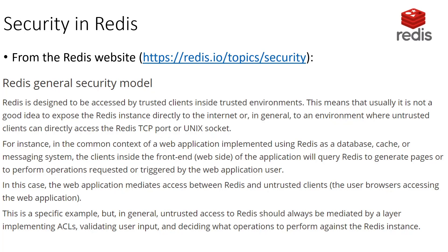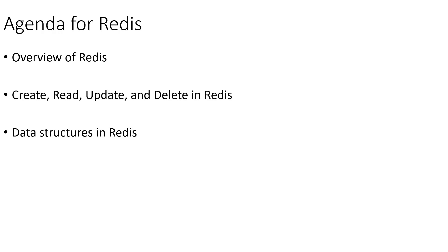With the Redis instance we have online right now, hosted in AWS ElastiCache, it is only going to be accessible from our private AWS network set up for this class — the same network where our MongoDB and Neo4j servers run. So during the demo, I won't be able to connect to the Redis server directly from the machine I'm presenting from. Instead, I'll SSH into our MongoDB server, where I have the Redis client installed, and use that to connect to the Redis server hosted in AWS ElastiCache.